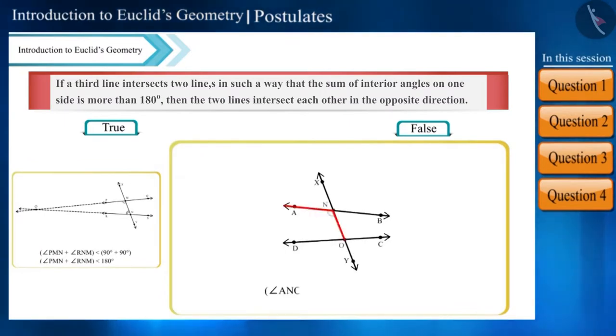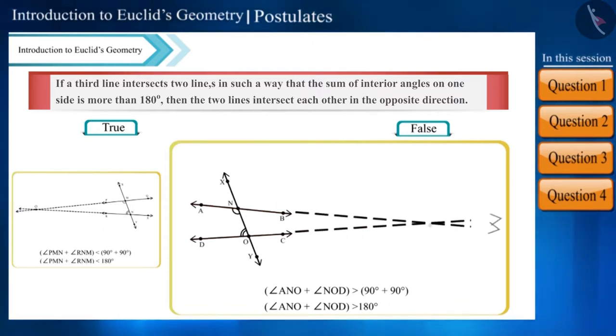Similarly, if the angle sum is more than 180 degrees, the sum of interior angles on the other side will be less than 180 degrees, and the lines will intersect each other on that side. Therefore, the given statement is true.